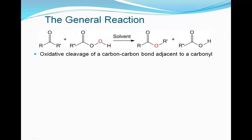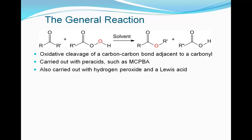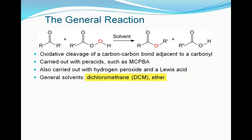Baeyer-Villiger oxidation is a particular type of carbonyl oxidation reaction. It features an oxidative cleavage of a carbon-carbon bond adjacent to a carbonyl. The reaction can be carried out with peracids, such as MCPBA, or with hydrogen peroxide and a Lewis acid. Dichloromethane and ether are common solvents used in Baeyer-Villiger oxidation.